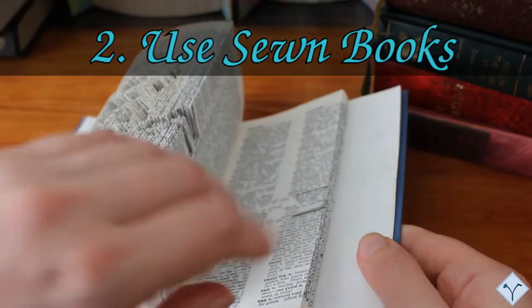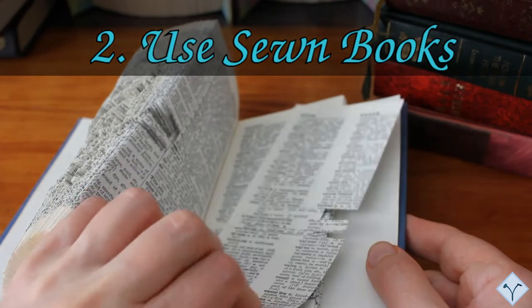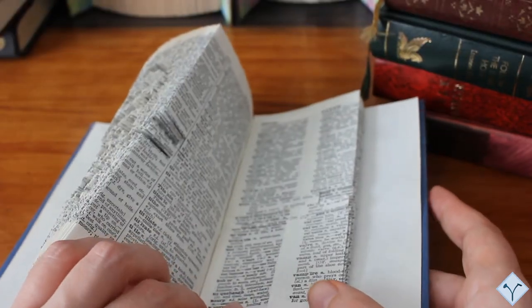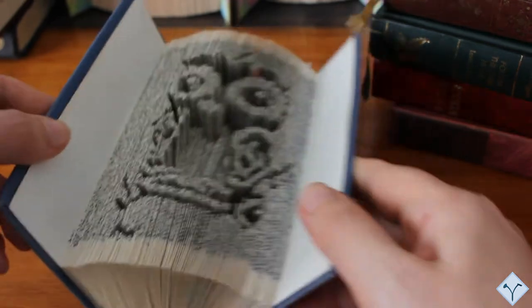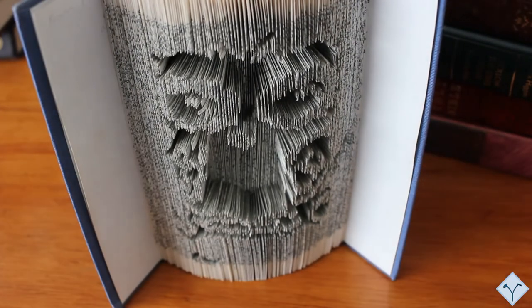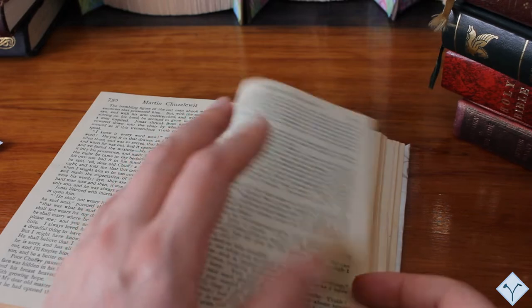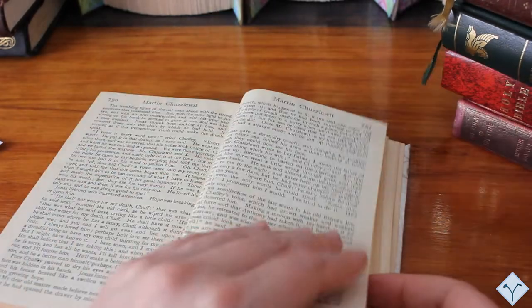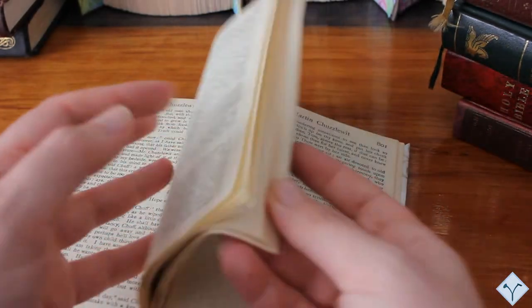Second, if you have a choice, use books which are additionally sewn, not only glued. Although most hardback books I have seen had been sewn, a few of them were only glued. Usually books with tissue paper are only glued, like bibles or dictionaries. The risk with these books is that the sheets may get loose.